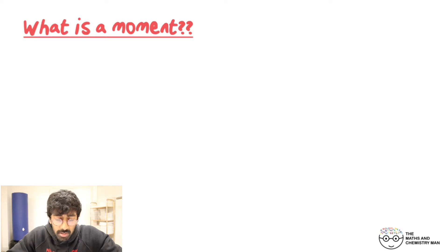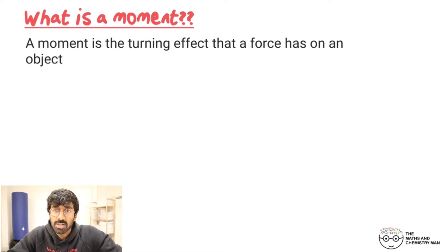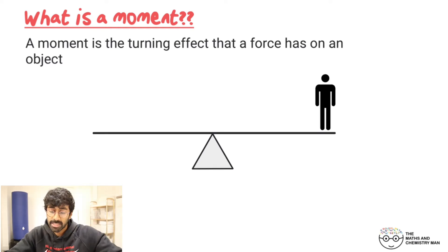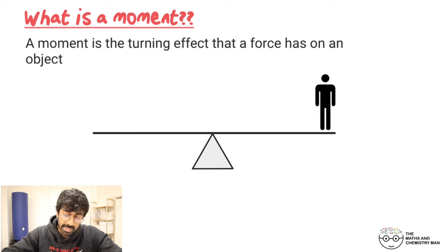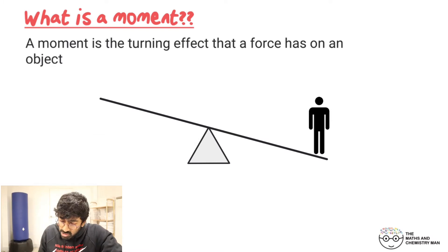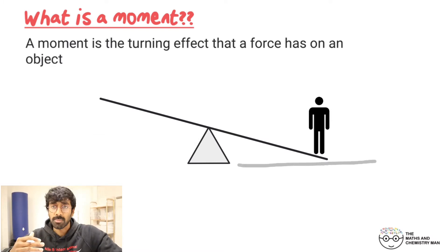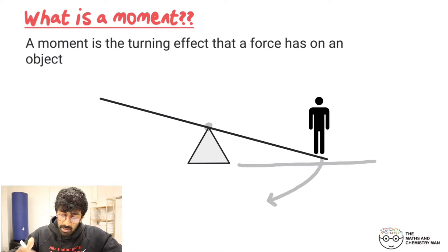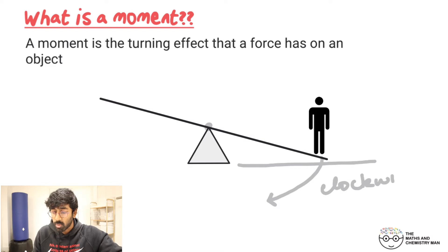First of all we're going to talk about what moments actually are. A moment can be described as the turning effect that a force has on an object, and the best place to think about this in real life is on a seesaw. If you've got a man standing on the end, his weight pushes down on the seesaw, causing it to tip downwards. Imagine there was no ground — the seesaw would just keep spinning around the pivot, around the triangle bit, in the clockwise direction.